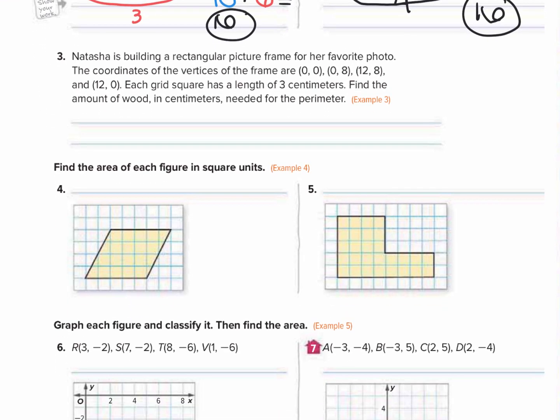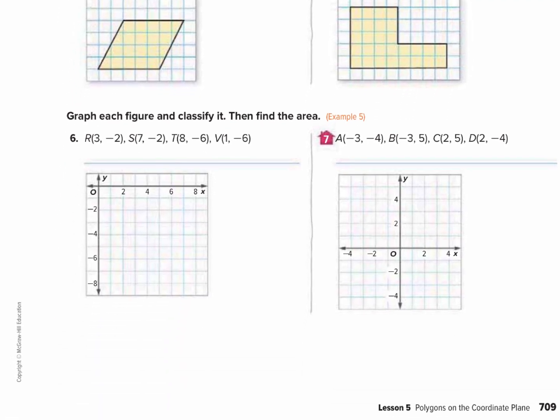Now we're going to scroll down and do numbers 6 and 7. These say graph each figure and classify it, then find the area. So we don't know what shapes these are going to be until we graph them. First we want to plot the point (3, -2), so we start at the origin, 3 to the right, down 2. We're going to put a point right here. That's point R.